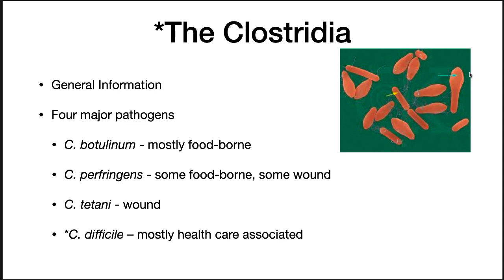In this video, we'll be covering the Clostridia. Four major pathogens in the Clostridium genus cause illness in humans. They are C. botulinum, which causes a deadly foodborne illness; C. perfringens, that causes a not-so-deadly foodborne illness and wound infections; C. tetani, that causes a deadly wound infection; and C. difficile, that causes a serious GI infection that is a significant cause of death in the elderly and immunocompromised.